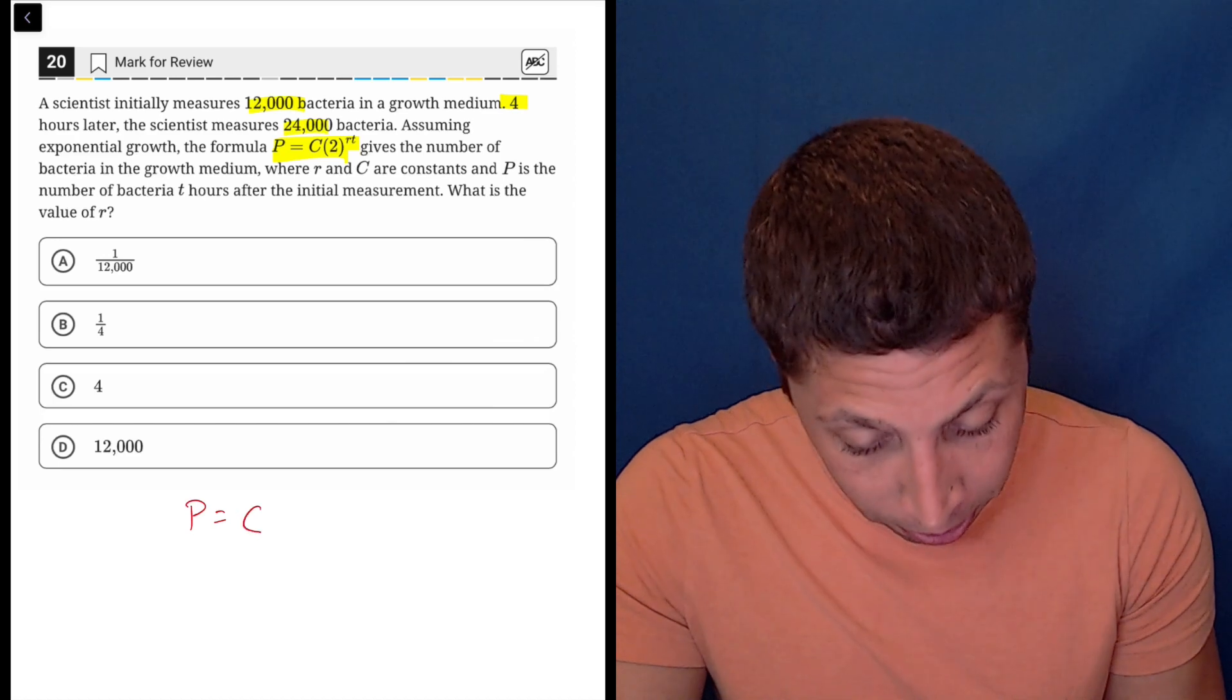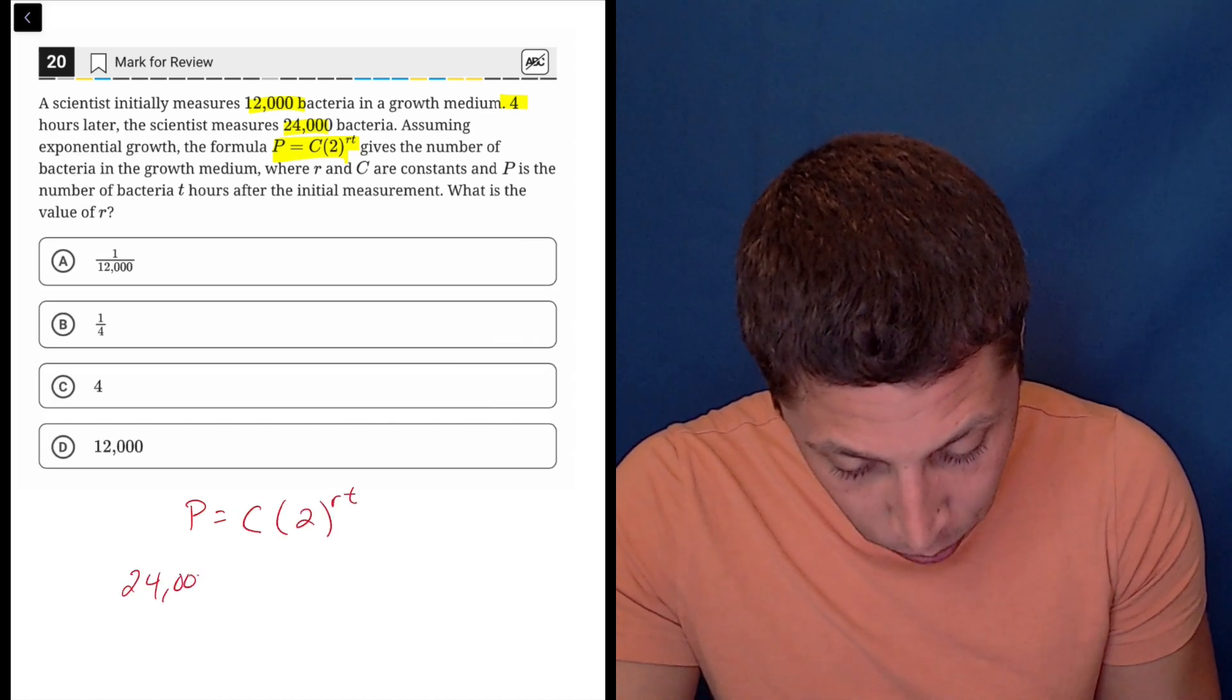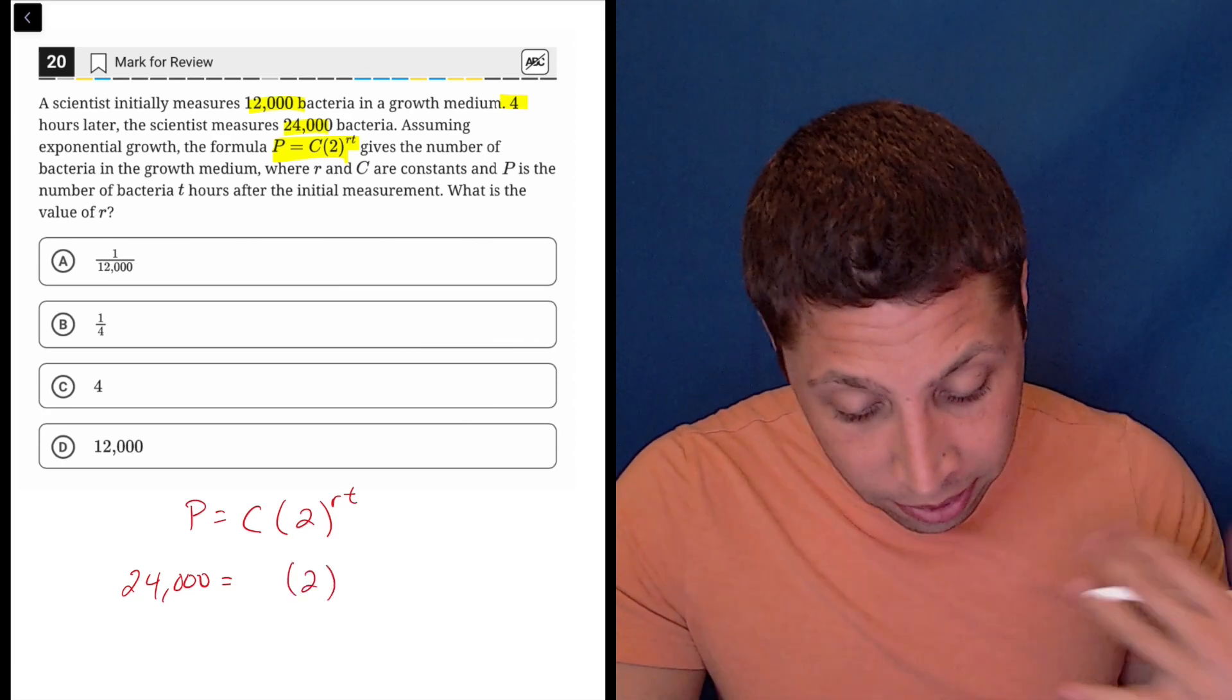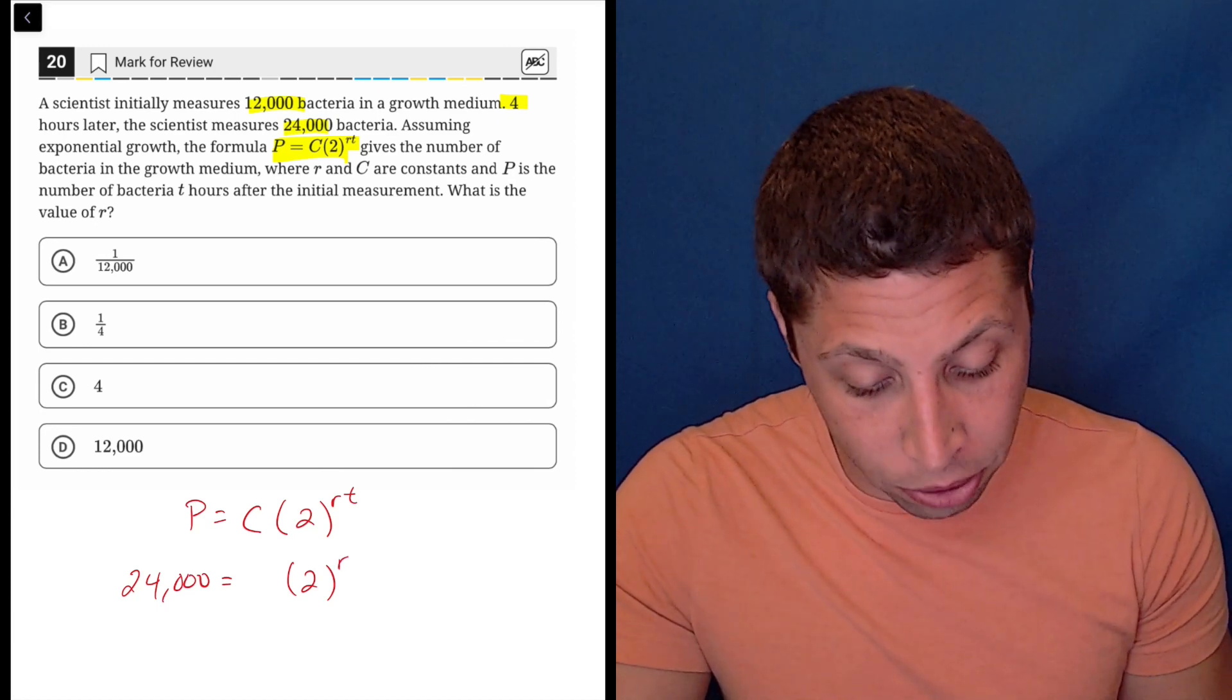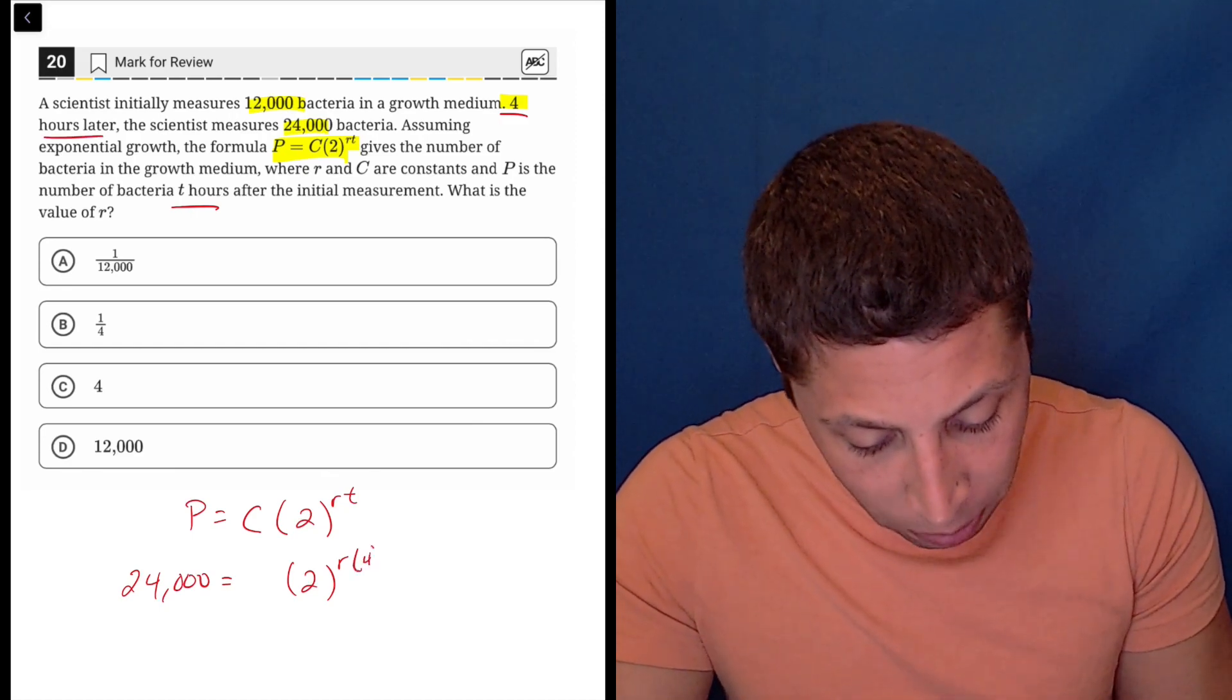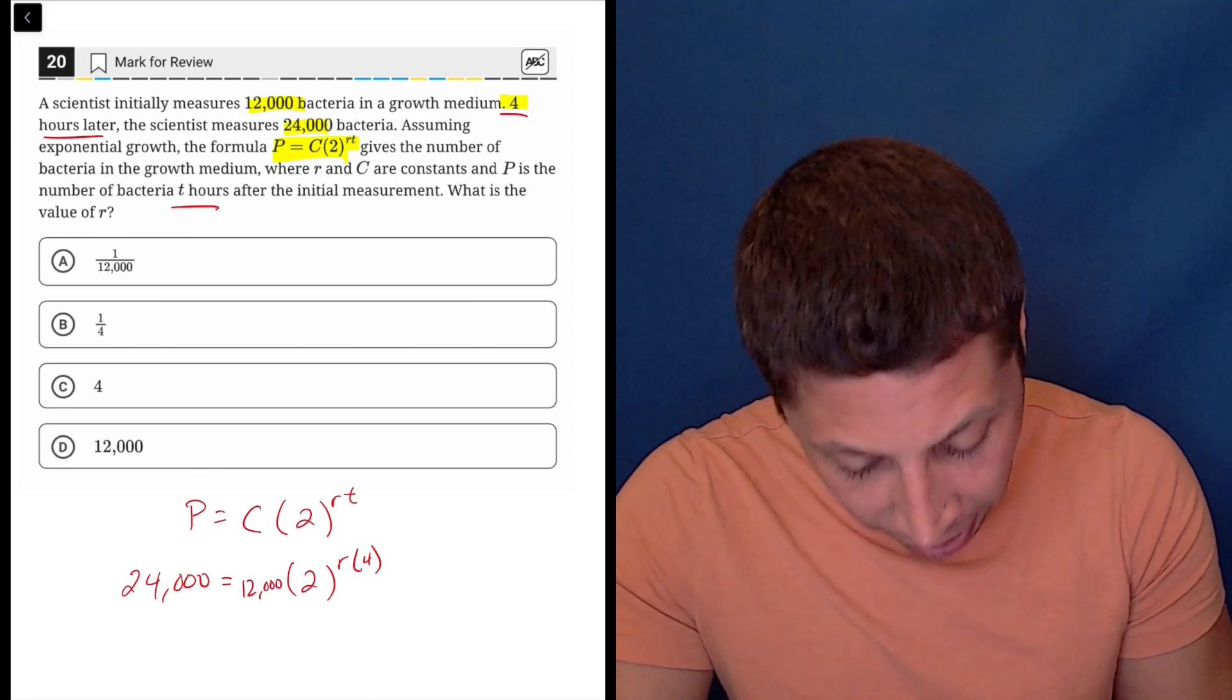24,000 is going to be the value of P. They don't tell us C. Hopefully you know from experience what that's going to be, but even if not, we know we're solving for R, so that's a mystery. They tell us T hours, and here they say it's four hours, so we can put 4 in for T. That just leaves 12,000 bacteria as the value for C.